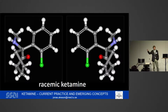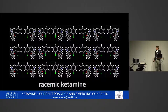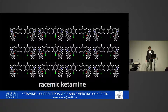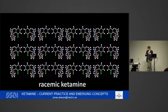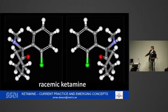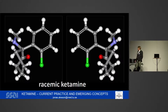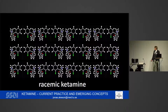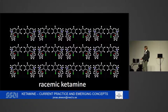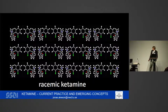In racemic ketamine, which most of us are very familiar with, we have equal proportions of the left and the right enantiomer — it's like our hands. These two enantiomers have different actions. We know that S-ketamine is about twice as active as racemic ketamine, and racemic ketamine is about twice as active as R-ketamine. This means that when we administer ketanest, or S-ketamine, we use half the doses we are used to from the racemic drug.